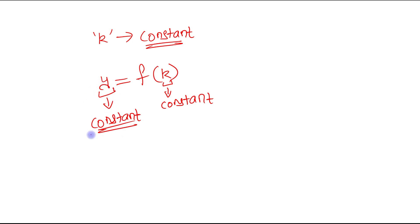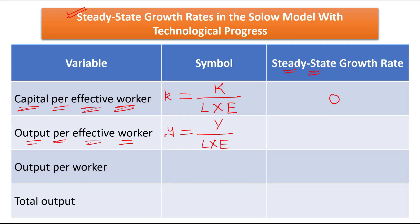If output per effective worker is constant in the steady state, then its steady-state growth rate will also be zero.